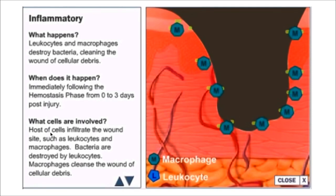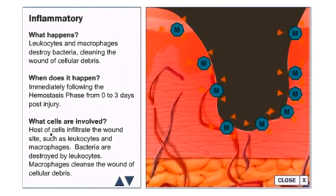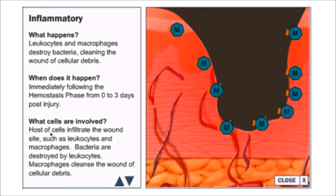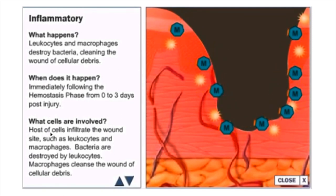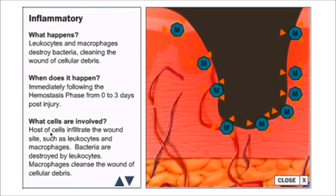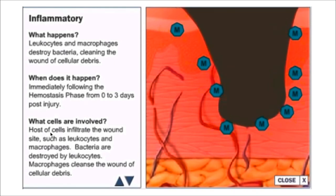Macrophages convert macromolecules into amino acids and sugars necessary for wound healing, and also attract contraction cells to encourage wound contraction. Vasodilation results from factors secreted by macrophages and other leukocytes in response to the inflammatory process. The objectives of the inflammatory phase are to clean debris and bacteria and prevent infection.